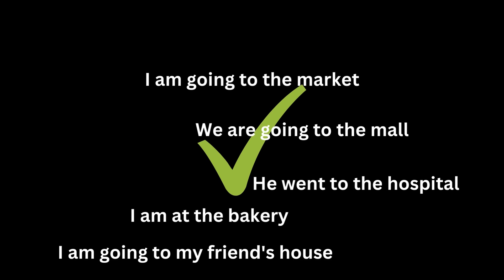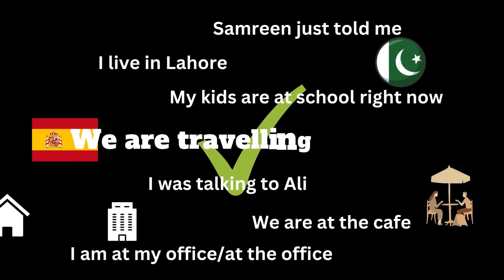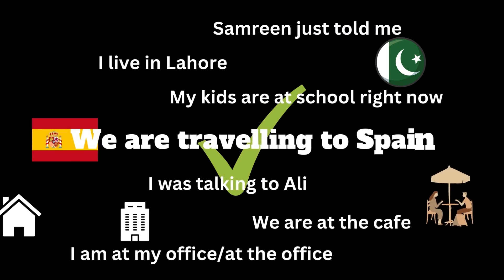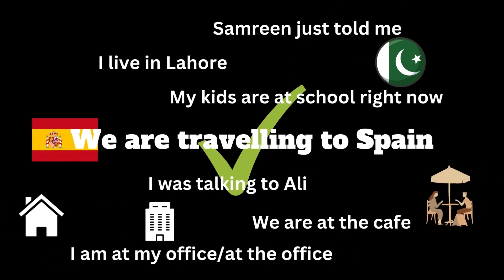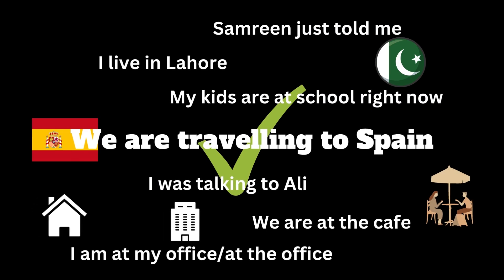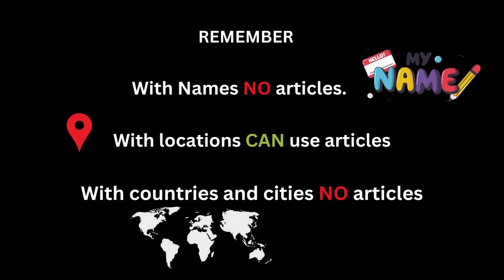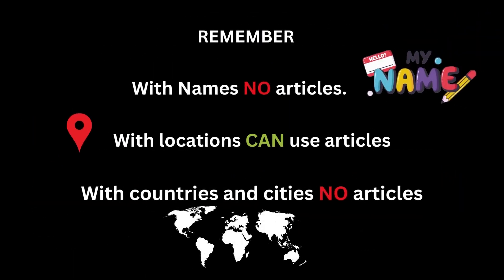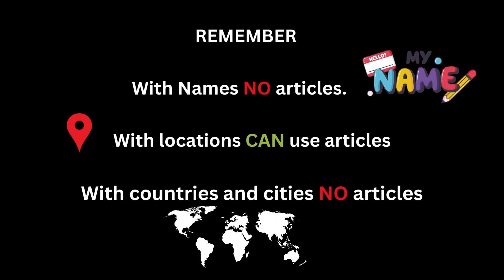But you never use articles with names of people — there is no such thing as 'the Muhammad Ali Jinnah' or 'the Allama Iqbal'. Names of countries also take no articles — there's no such thing as 'the Pakistan' or 'the India'. That's it — hope this helps, bye bye.